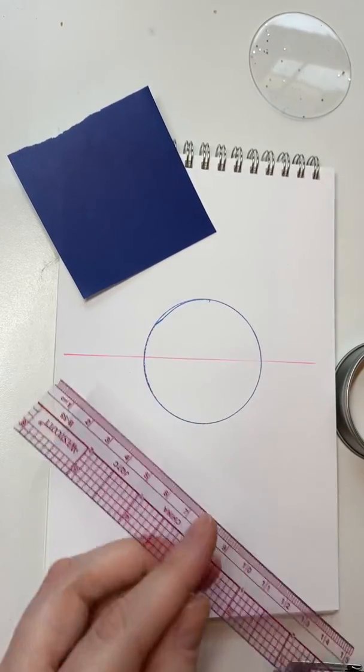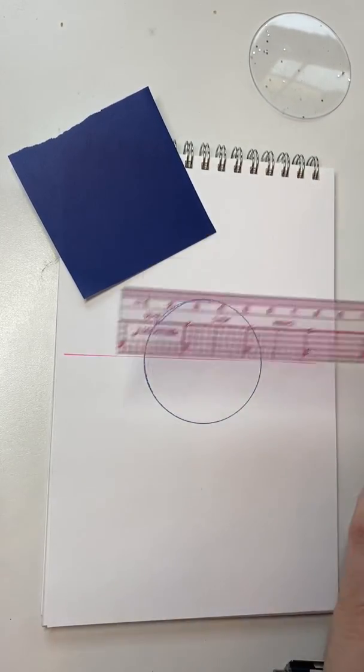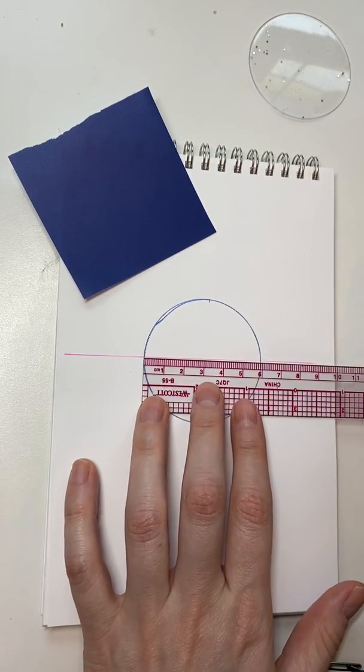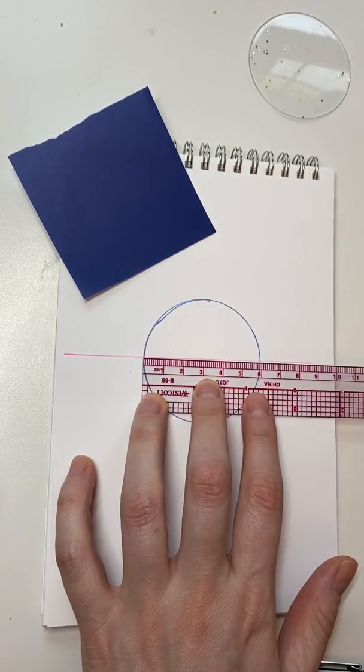Then, we're kind of eyeballing it. If you want to get all precise, you could measure and mark where the center of this thing is. I think that's a little excessive.